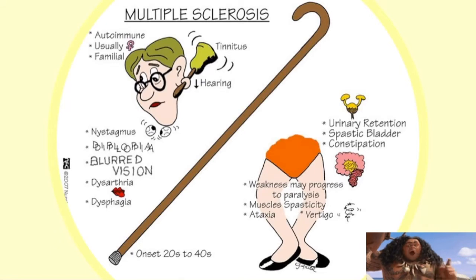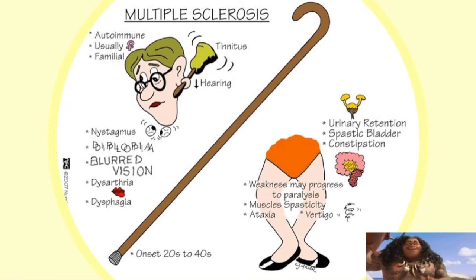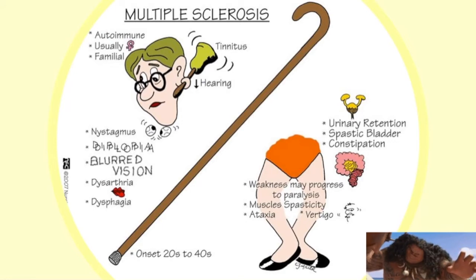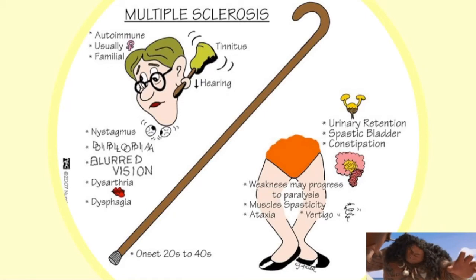Signs and symptoms include an autoimmune and usually familial origin. There is tinnitus and hearing problems due to involvement of the vestibulocochlear nerve, as well as nystagmus, diplopia, blurred vision, dysarthria, and dysphagia. Ocular signs and symptoms are very common. Onset typically occurs in patients aged 20 to 40. Patients are at higher risk for urinary retention, bladder spasticity, constipation, and weakness that may progress to paralysis, as well as muscle spasticity, ataxia, and vertigo.